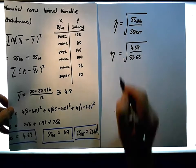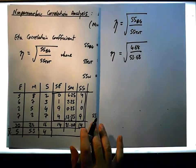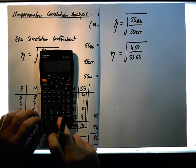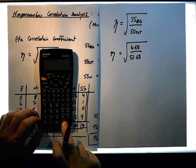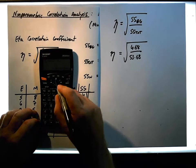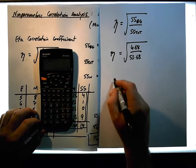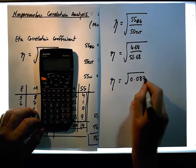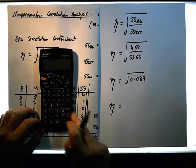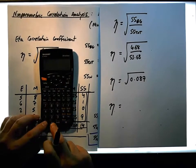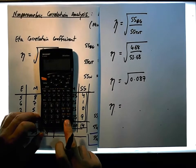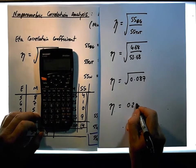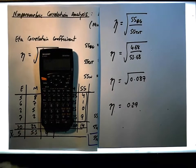So when we do this on our calculator, let's just grab this here. So now we have 4.68 divided by 53.68 gives us a value of 0.087, so we have eta is the square root of 0.087. Let's just actually calculate that now, the square root of 0.087 gives us 0.295, 0.29.